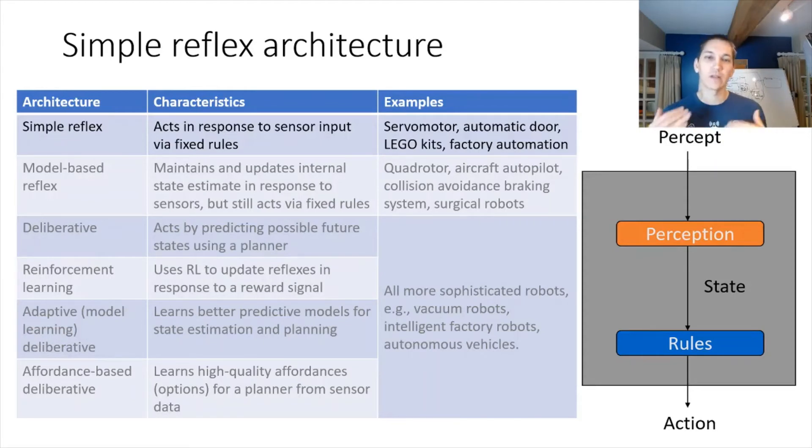Automatic doors in grocery stores also follow this type of architecture. These are almost not even robots. These are very simple types of systems. But factory automation oftentimes works in a simple reflex fashion. Essentially, if an object arrives, you execute motion one, then you sense that the object is in location B, and then you go and execute motion two.